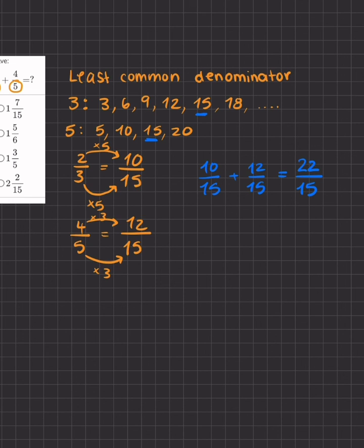how many times does 15 go into 22? It goes in once, and how many left over do I have? I have 7 left over, out of the same common denominator of 15. And this will be our final answer.